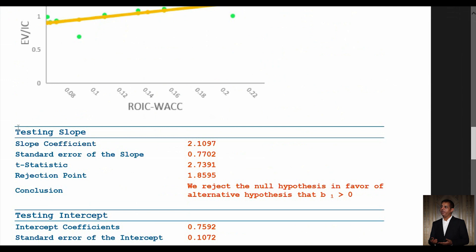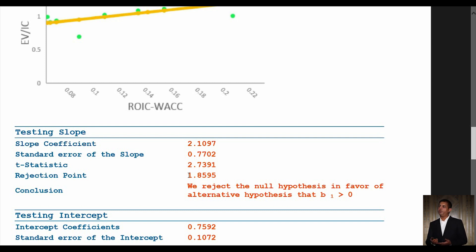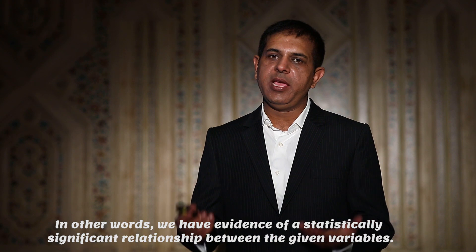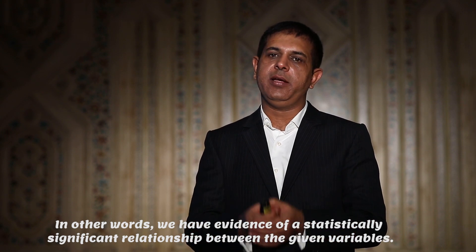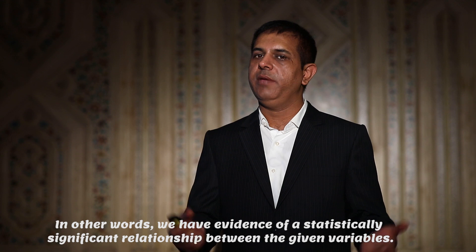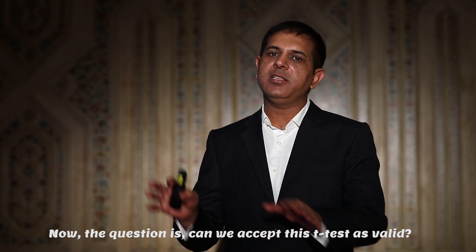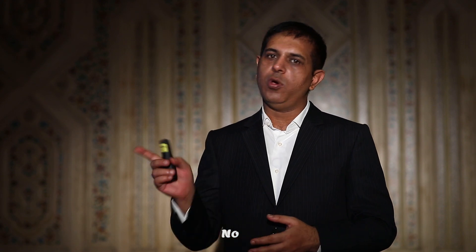Under the testing section, here is the result of our T-test. Since the T-statistic is greater than the rejection point, we reject the null hypothesis in favor of the alternative hypothesis that the slope coefficient is greater than zero. In other words, we have evidence of a statistically significant relationship between the given variables. But the question is: can we accept this T-test as valid? No.